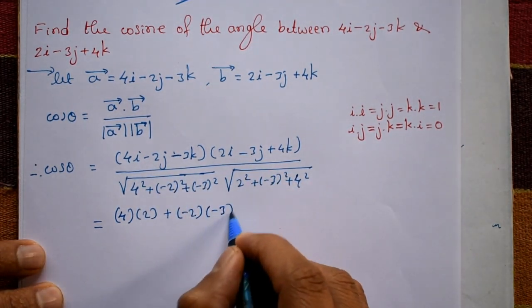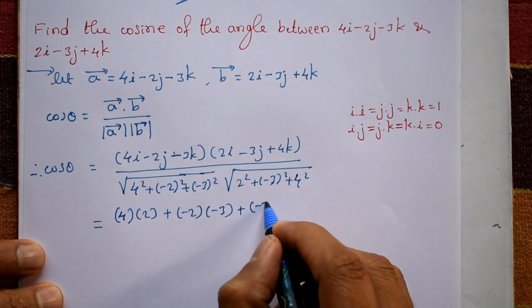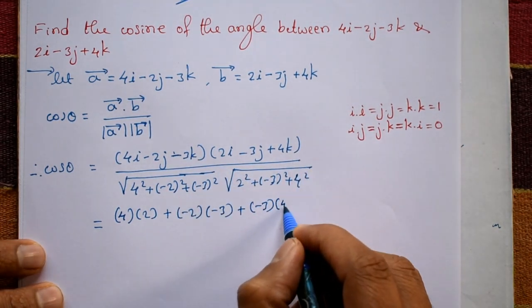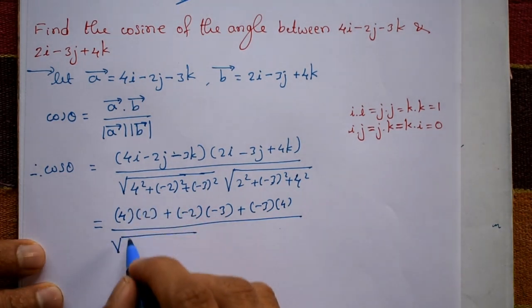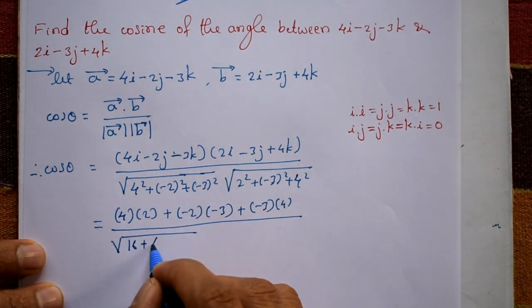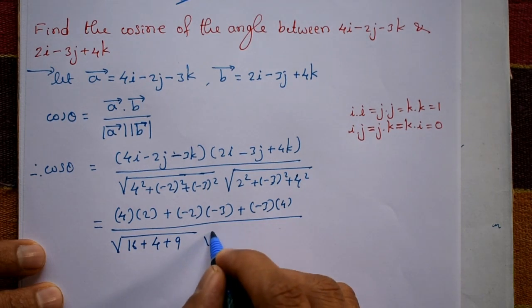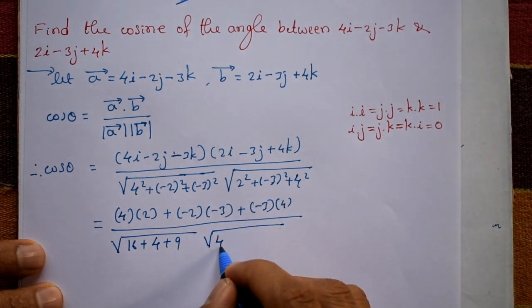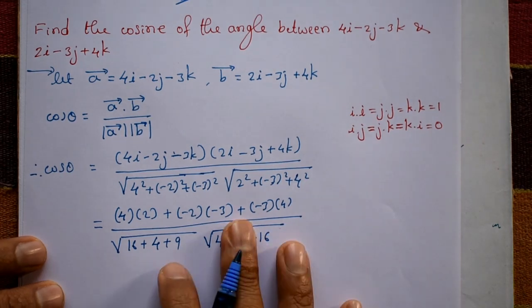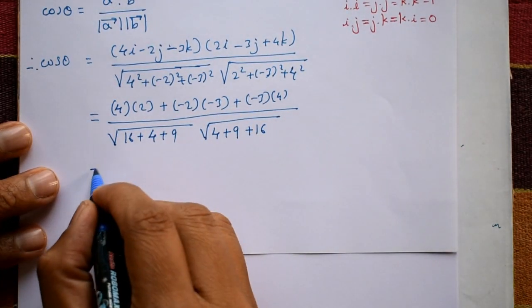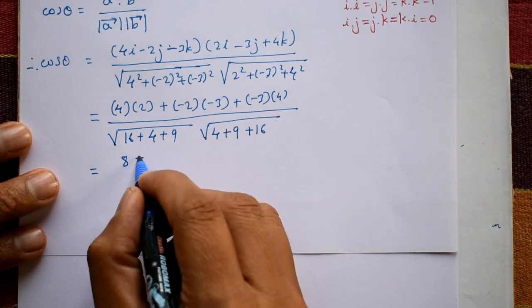Divided by square root of 16 plus 4, which is 4 plus 9, plus 16. This equals 8 plus 6 minus 12.